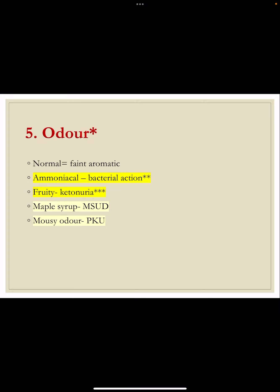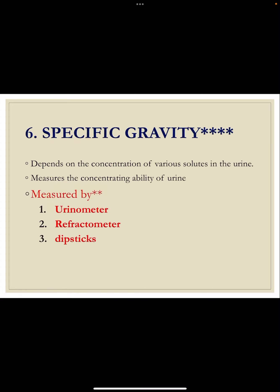Regarding odor: the normal odor of urine is faint and aromatic. Ammoniacal odor is due to bacterial infection, where bacteria convert urea to ammonia. Fruity odor is seen in ketonuria. Maple syrup or burnt sugar odor is seen in maple syrup urine disease. Mousy odor is seen in phenylketonuria. These are the important viva questions on odor.